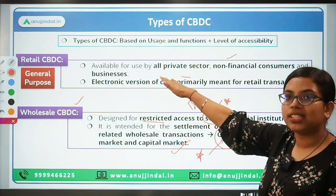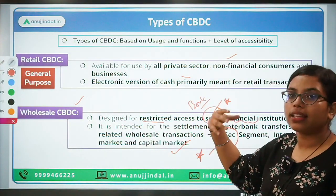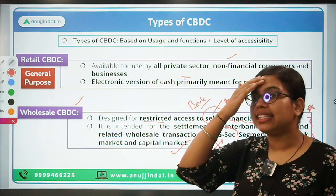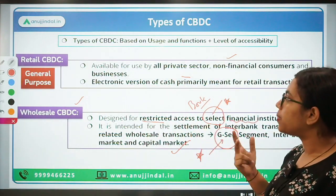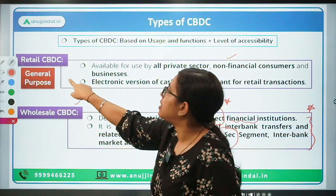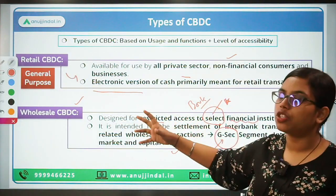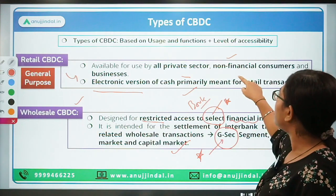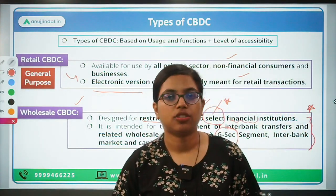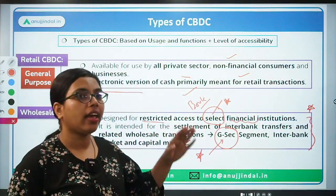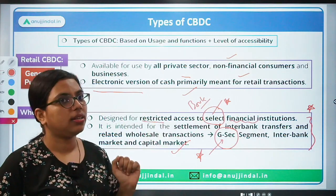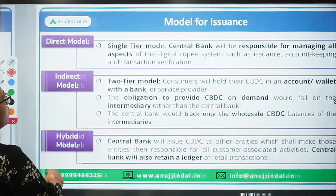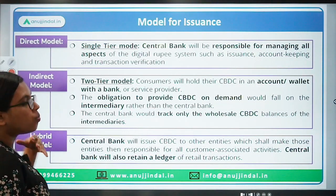Retail CBDC is for retail consumers — all private sector non-financial consumers and businesses. Wholesale CBDC is only for financial institutions. For general-purpose use by individuals and businesses, similar to how we use physical cash, the retail CBDC will be issued. This is similar to the electronic version of physical cash, primarily meant for retail transactions.